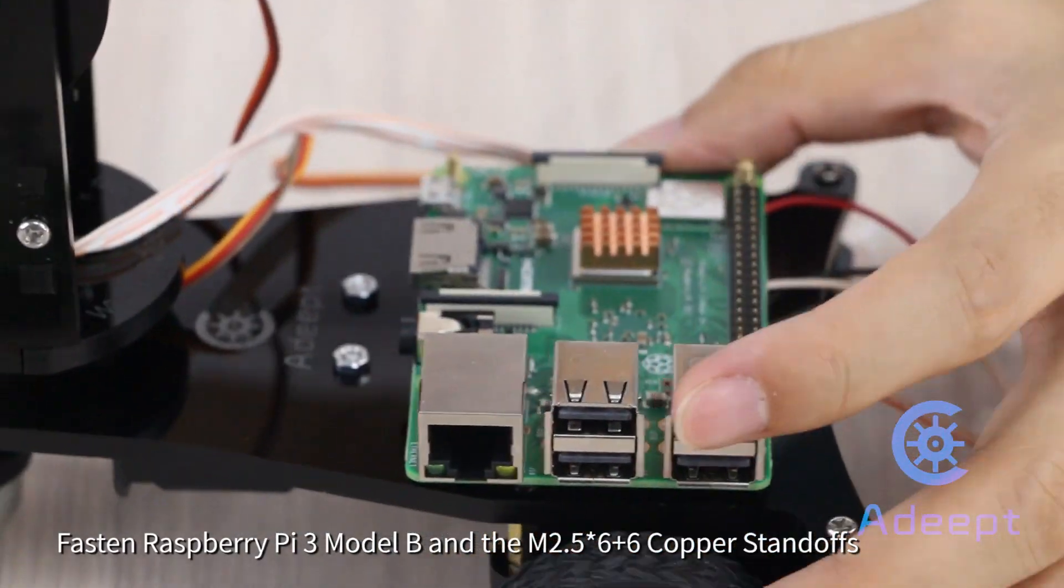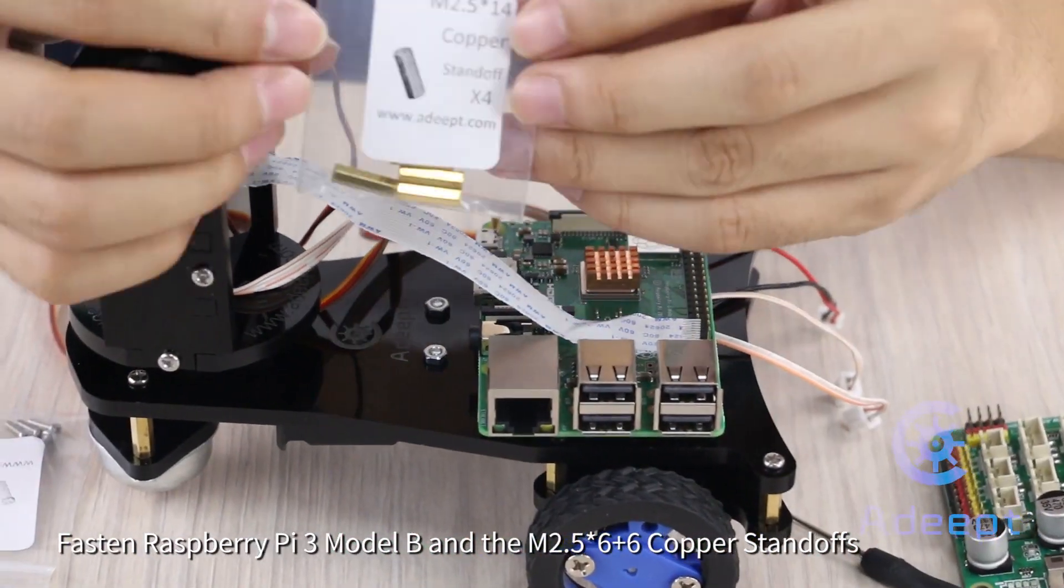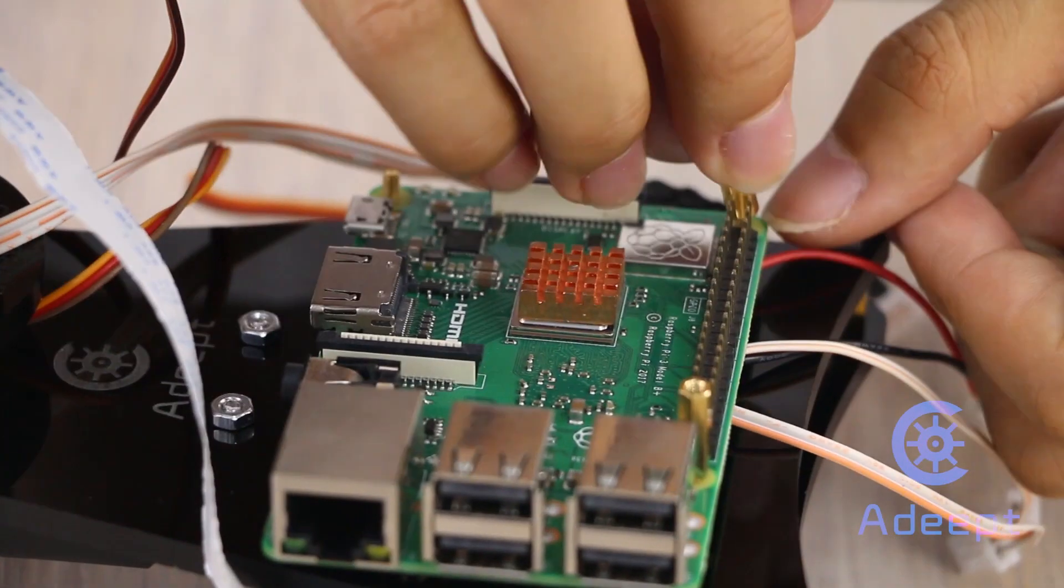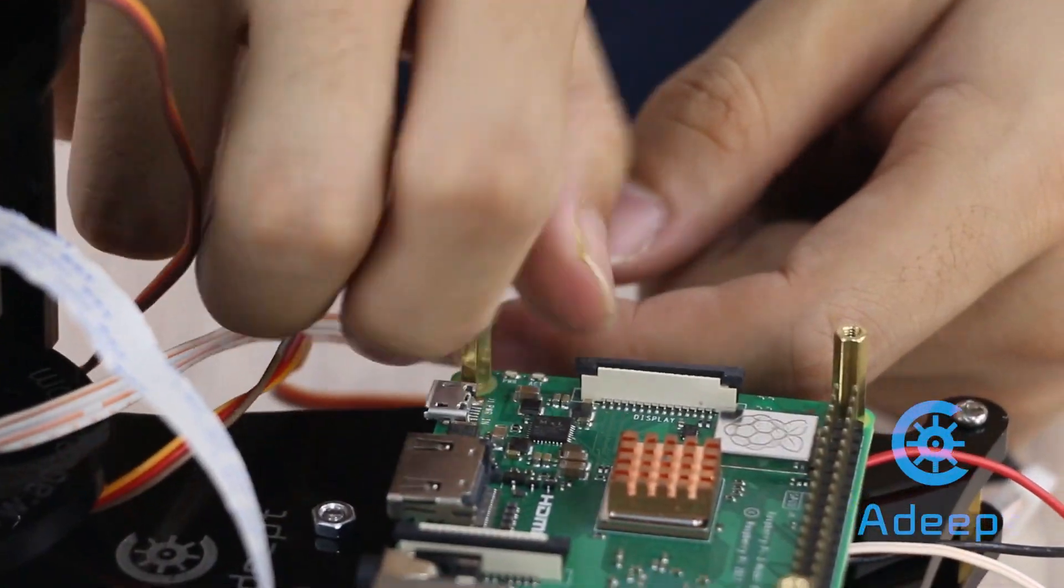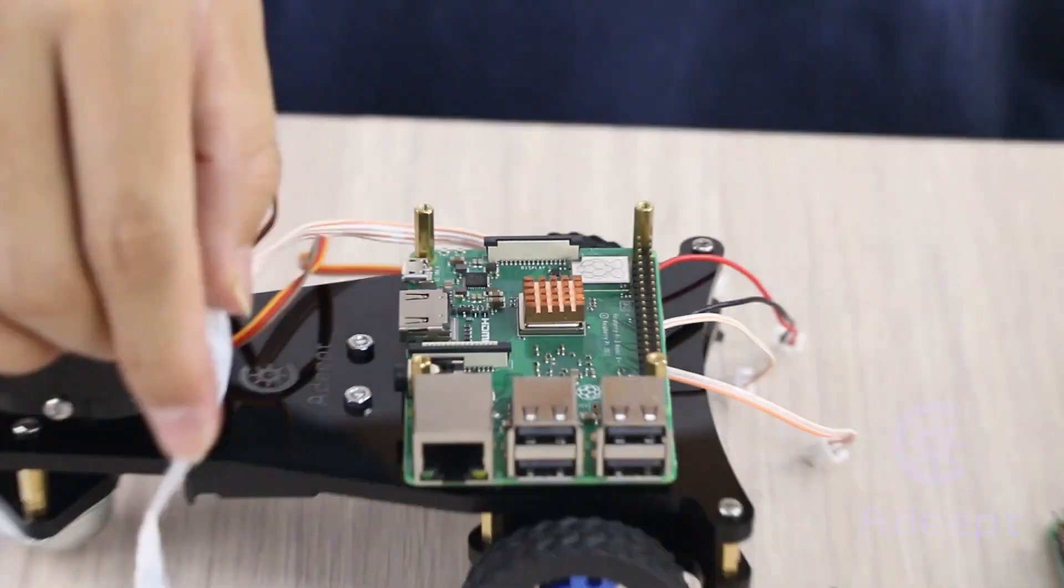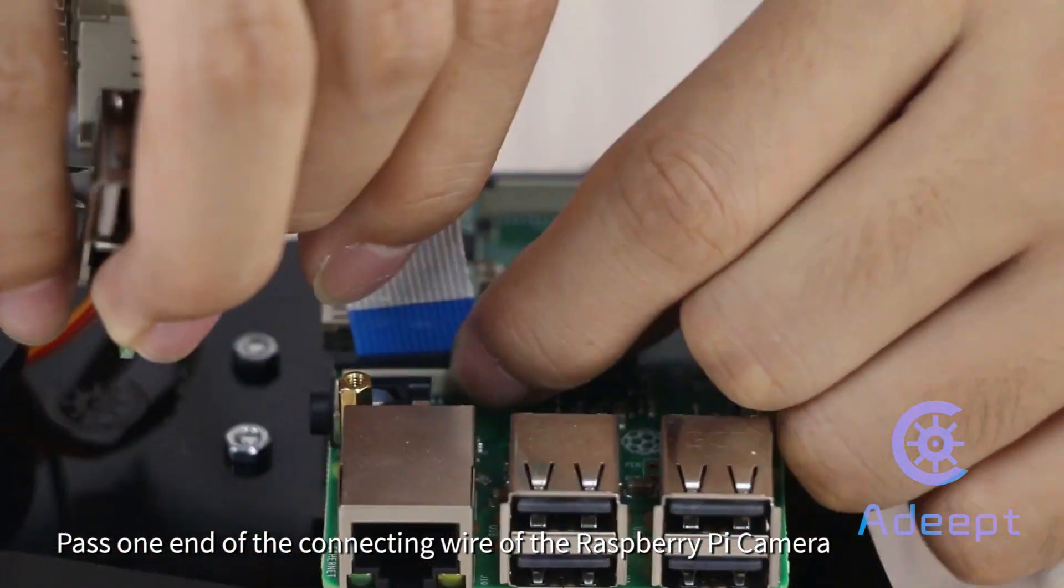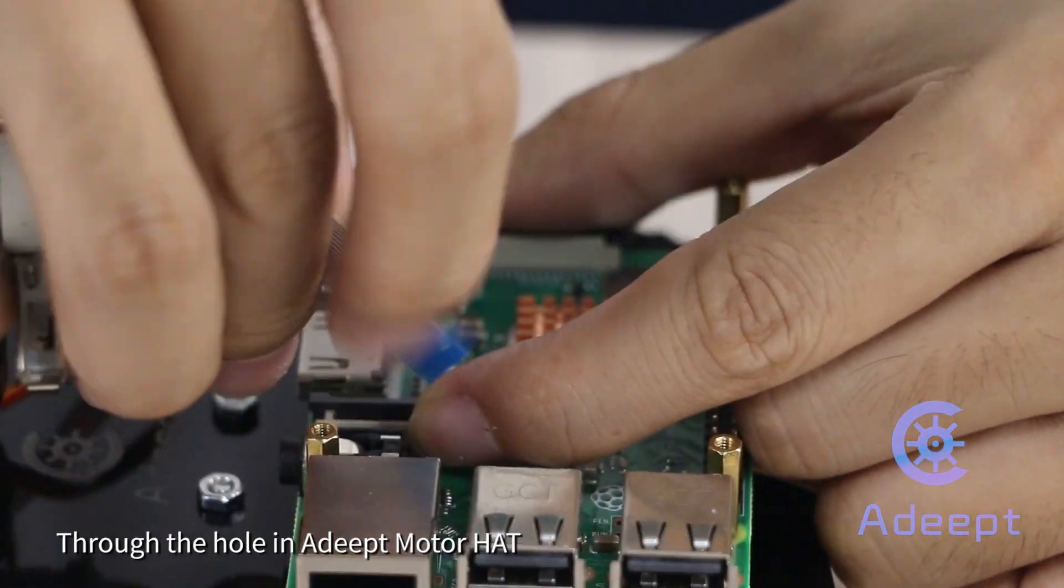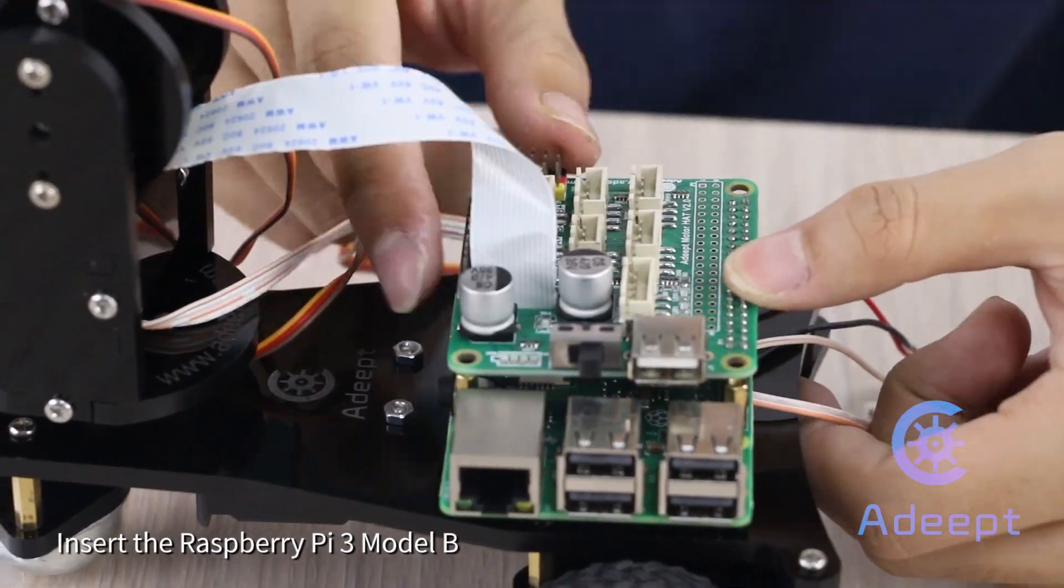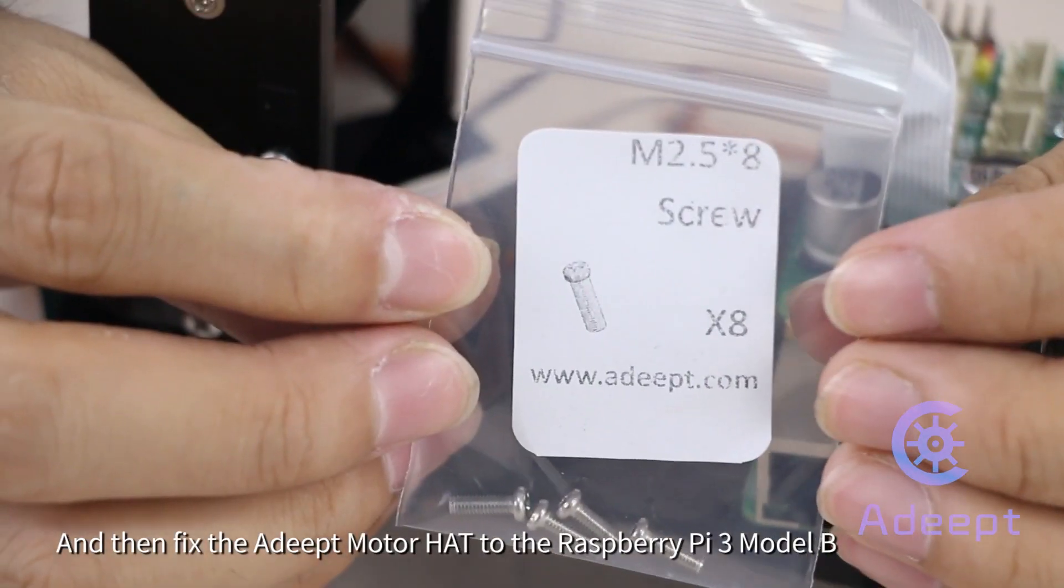Fasten the Raspberry Pi 3 Model B to the M2.5 multiple 6 plus 6 copper standoffs. Pass one end of the connecting wire of the Raspberry Pi camera through the hole in the Adeept motor HAT. Insert it into the Raspberry Pi 3 Model B, and then fix the Adeept motor HAT to the Raspberry Pi 3 Model B.